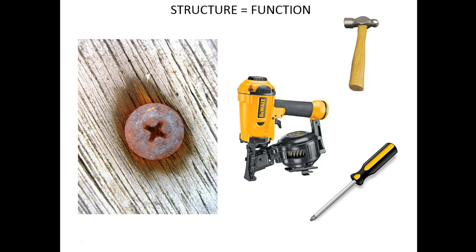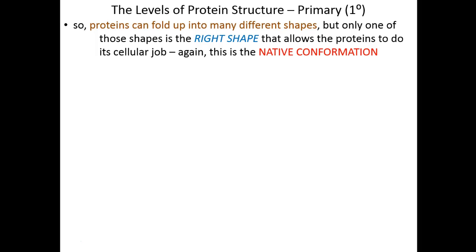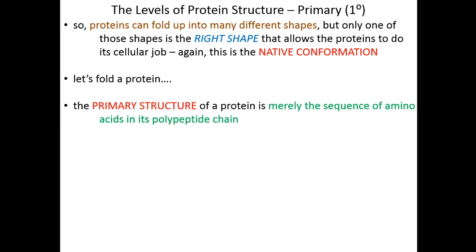Proteins have a three-dimensional shape, and that shape and only that shape allows the protein to do its job and only that job. You can think of proteins as microscopic nano tools — nano machines that do the jobs the cell needs done in order to survive. So now let's start to talk about the different levels of protein structure. There are four, from primary to quaternary, but we'll only talk about the first two here. Only one of those shapes is the correct shape that allows the protein to do its job — we call that the native conformation.